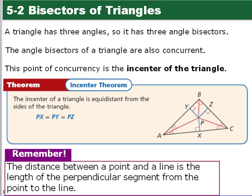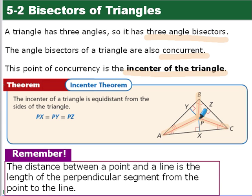Now we're going to look at the incenter of a triangle. The triangle has three angles, which means it has three angle bisectors. The angle bisectors are also concurrent — they intersect at one point called the incenter of the triangle. At that point, PX equals PY equals PZ. Remember, the distance between a point and a line is the length of the perpendicular segment from the point to the line — that's the shortest distance.